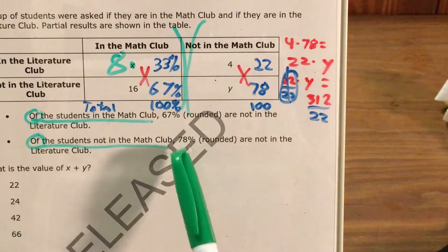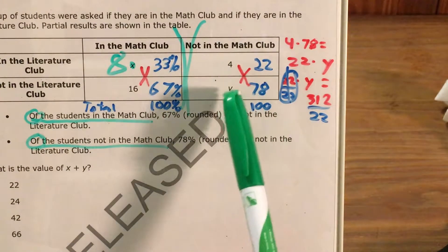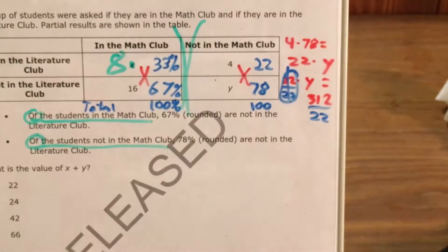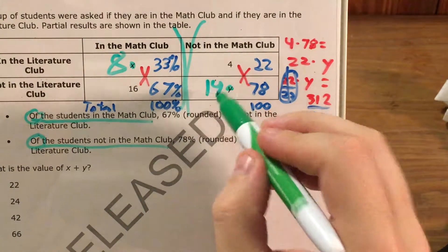312 divided by 22 gets me a little more than 14. Once again, this 78% was rounded, which means that this number we got can be rounded as well. And I'm going to round it down to 14. So now instead of y, I have 14.